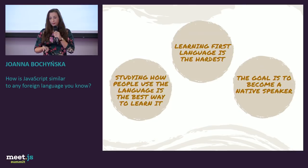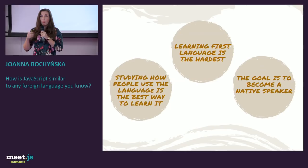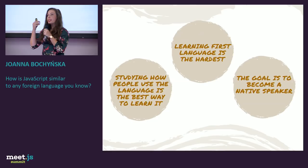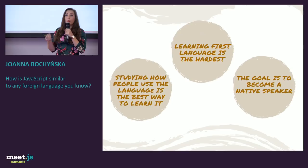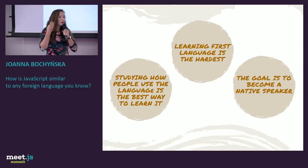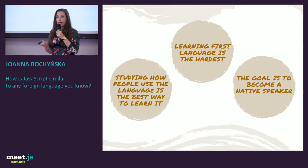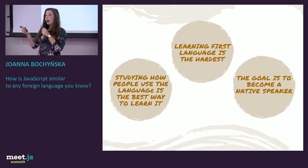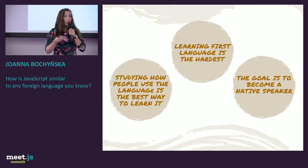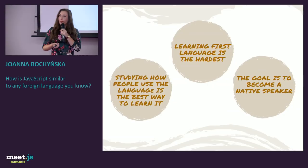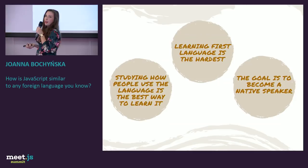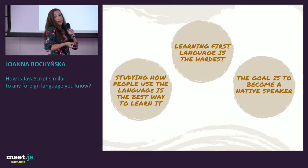You learn best by looking at other people and studying patterns. You won't learn English only from a book — you have to see, speak to people, listen to audio, watch movies. And the same with JavaScript: you can't learn a programming language by reading a book or doing a course. You have to see the code, use it, and do it in a practical way. The third similarity is that the goal is to become a native speaker — fluent, with no problems using the language.